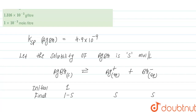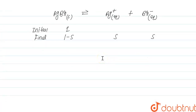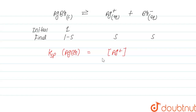Now we can write the Ksp expression of AgBr. The Ksp expression equals the concentration of Ag⁺ raised to its stoichiometric coefficient of one, multiplied by the concentration of Br⁻ raised to its stoichiometric coefficient of one. AgBr is a solid so its activity is one. Therefore Ksp = [Ag⁺][Br⁻] = s × s = s².